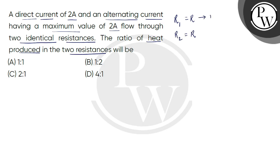The first resistance has a direct current flow which has a magnitude of 2 ampere. And the second resistance has an alternating current flow which has a maximum value of 2 ampere. So we have to find the ratio of heat produced in these two resistors.